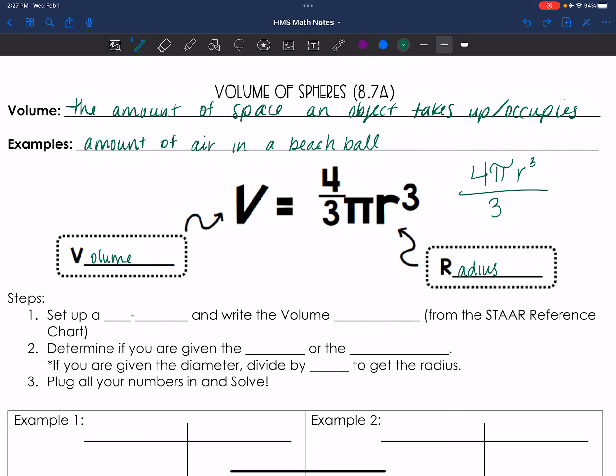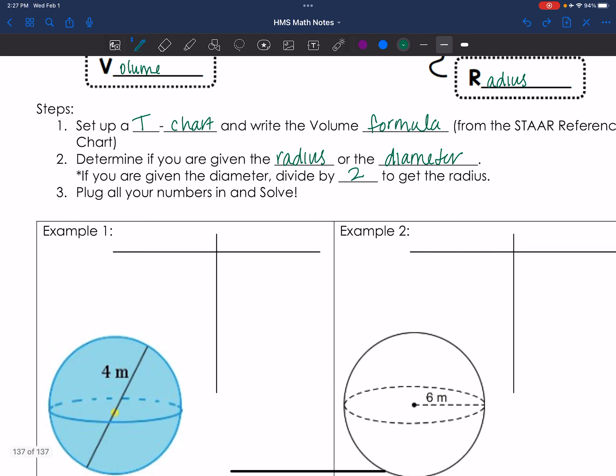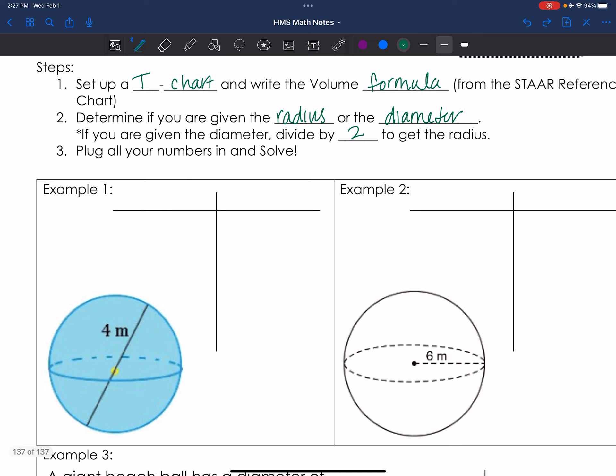So we are going to set up a T chart and write the formula. Four thirds pi r cubed. Then we're going to determine the radius or the diameter. But clearly, if we're given the diameter, we're just going to cut that guy in half. So let's get into it.